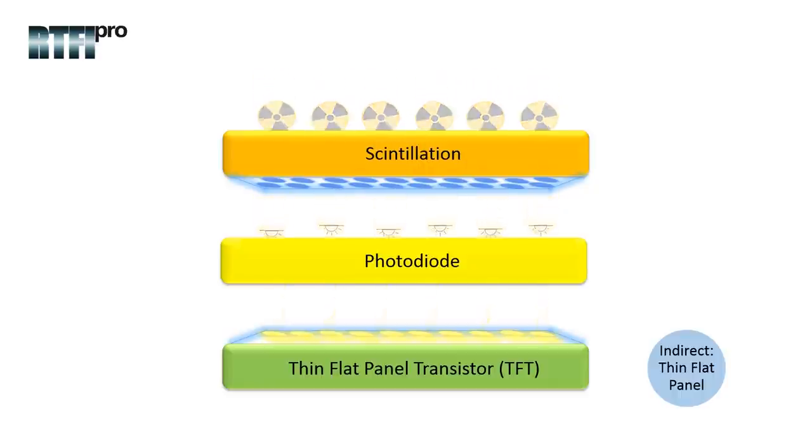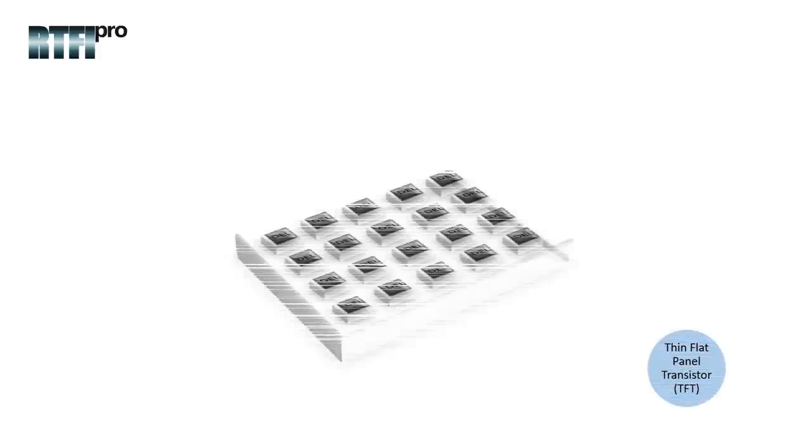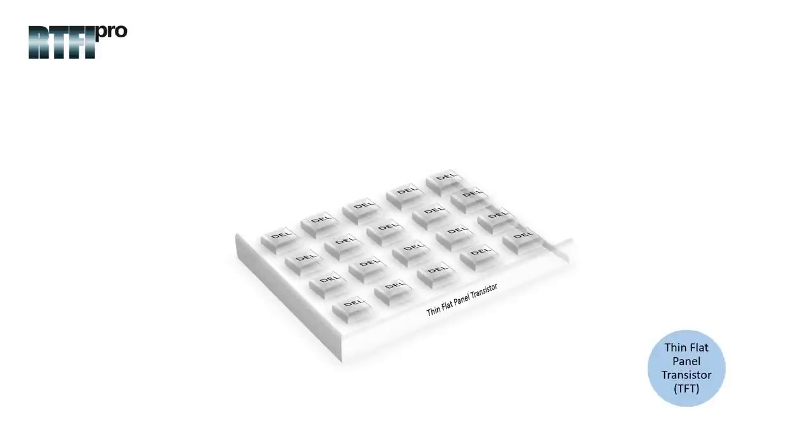The thin flat panel transistor is composed of an array or matrix of small detector elements known as DELs. Each DEL is composed of a pixel element, which is an active element within the DELs.